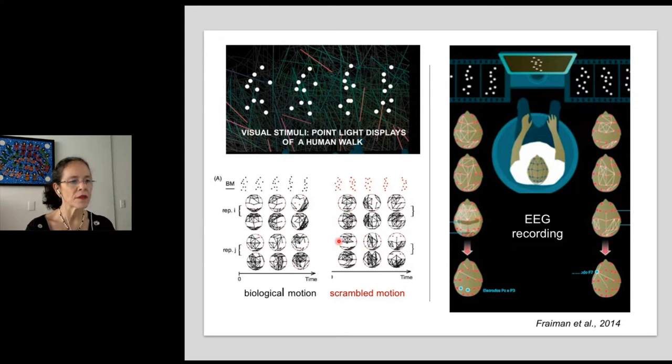Comparison of the graphs retrieved during the visualization of biological versus scrambled motion reveals statistical differences between these conditions. However, this approach precluded retrieving from the recorded signals a signature corresponding to the employed stimuli.